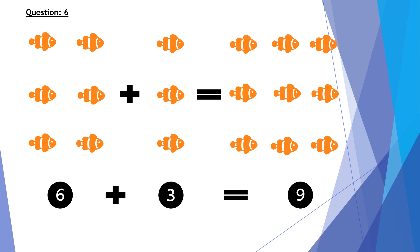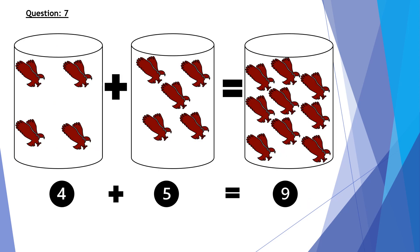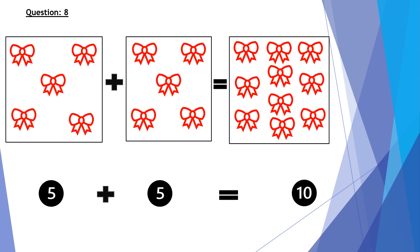Question number seven: four beds plus five beds equals nine beds. So in the number form, four plus five equals nine. Question number eight: five bells plus five bells equals ten. So in the number form, five plus five equals ten.